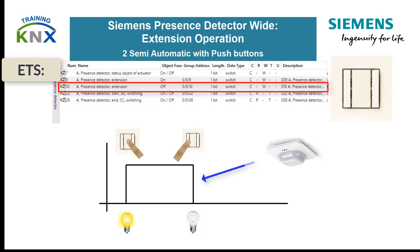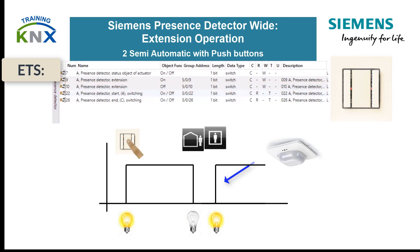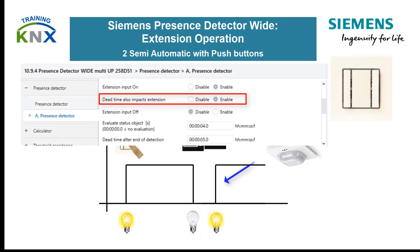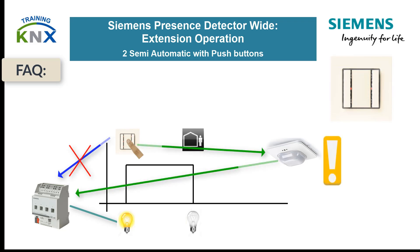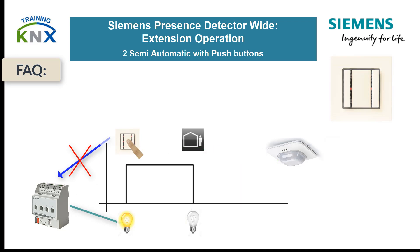However, the presence detector can react immediately to movement and switch on again, if it is set in this way. This can be prevented for a certain time if the "dead time also affects extension" parameter is enabled. Now, the answer to a frequently asked question: should the actuator also be switched when manual override is used? The answer is clearly no. The presence detector connects the automatic with the manual override and should therefore control the actuator alone.